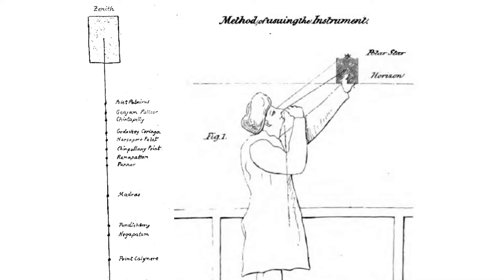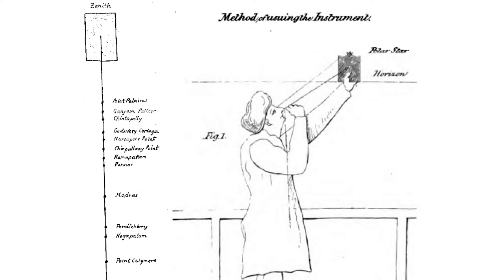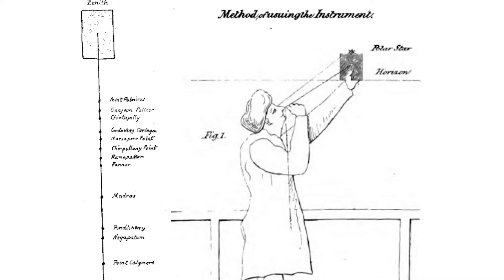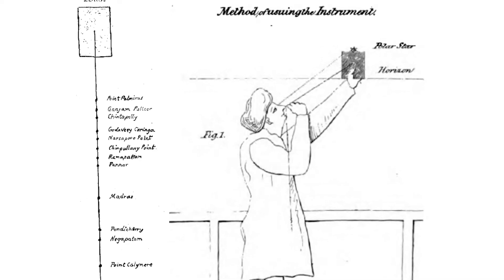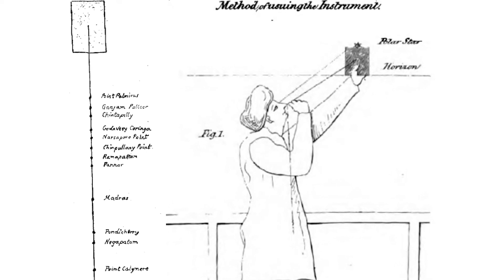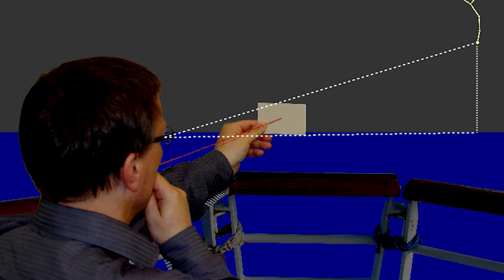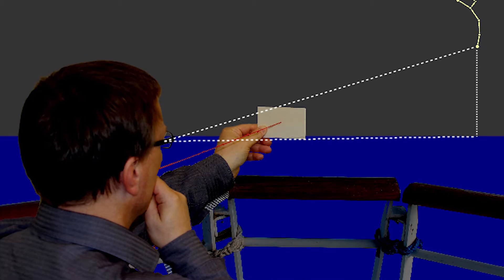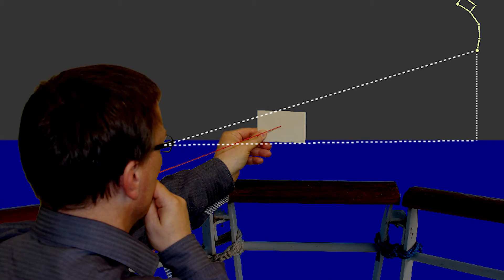Using the string to record the measurements, you measure how far you need to move the board away from your face for the bottom to contact the horizon and the top to touch Polaris, while holding the string in your teeth.